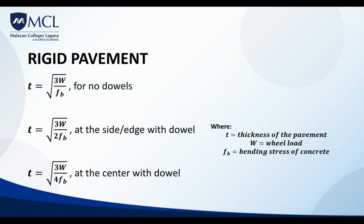For rigid pavement thickness formulas: with no dowels, T = √(3W / FB); at the side or edge with dowels, T = √(3W / 2FB); and at the center with dowels, T = √(3W / 4FB). Where T is the thickness of the pavement, W is the wheel load, and FB is the bending stress of concrete.